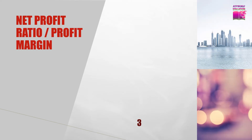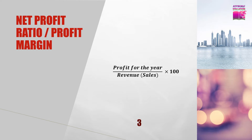Now, what is profit ratio, profit margin, or net profit ratio? The formula of net profit ratio or profit margin is: profit for the year divided by revenue or sales, times 100. This gives you the answer in percentage form, representing the percentage of profit earned by the business in that year.